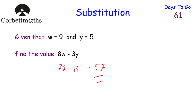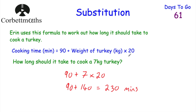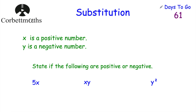We've looked at substituting into expressions and worded questions with real-world situations. Sometimes substitution questions involve positive and negative numbers or odd and even numbers. Here, X is a positive number and Y is a negative number. Is 5X positive or negative? 5 times a positive number gives a positive number, so 5X is positive. For example, if X equals 10, then 5 times 10 equals 50.